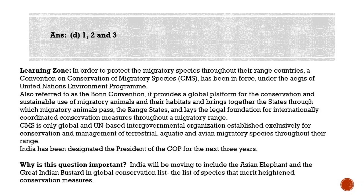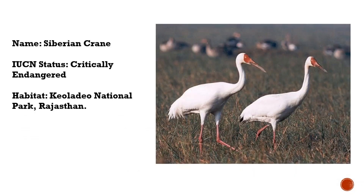CMS brings together states and internationally coordinates conservation measures for these migratory animals. We will now look into a few famous migratory species seen in our country. The first one is the Siberian Crane — it is a critically endangered bird, a large and strikingly majestic migratory bird that breeds and winters in wetlands. They are known to winter at Keoladeo National Park in Rajasthan.